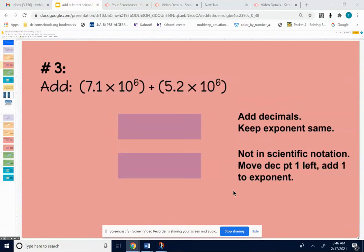Okay, number three. We're going to add 7.1 times 10 to the sixth plus 5.2 times 10 to the sixth. Now at the get-go, this is nice because the exponents on the tens are the same. So we don't have to do any work at the beginning. So what we're going to do is keep the 10 to the sixth the same and add 7.1 and 5.2.